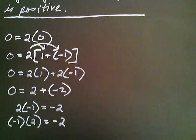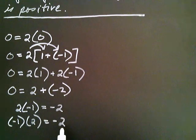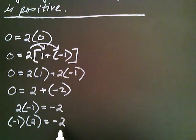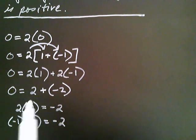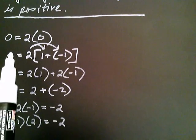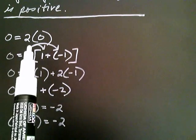Kind of an interesting property — negative one multiplied by two is negative two. Now let's try that again, but instead of writing zero as two times zero...